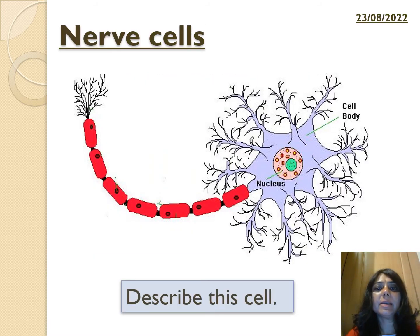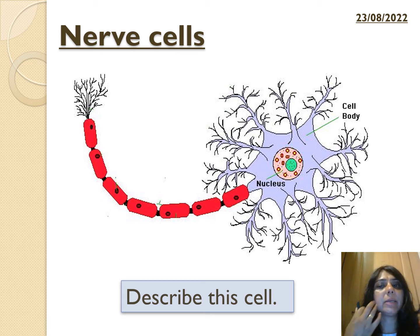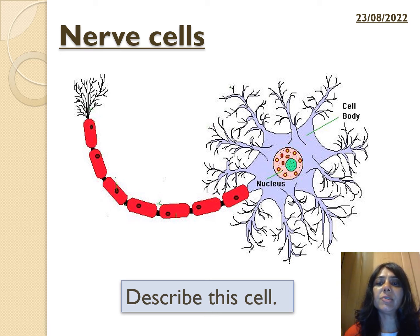This is a nerve cell. You can see it's got lots of surface area spread around it. It has the axon at the bottom connected to the main cell, depending on where it's going. It's spread out, and the part containing the main information is called the nucleus. The whole structure is called the cell body.